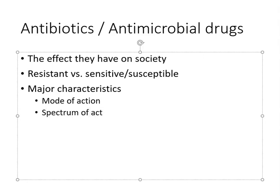Spectrum of activity is where we get broad spectrum and narrow spectrum. This refers to which microbes are killed or affected by that antibiotic. This is not something we can predict — it's very complicated because it has to do with how the structure of the antimicrobial molecule interacts with the outer parts of the cell. Any time we modify an antimicrobial by adding a tiny atom to it, we change its spectrum of activity, but we don't change its mode of action.